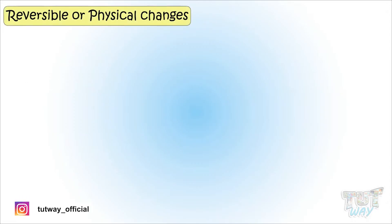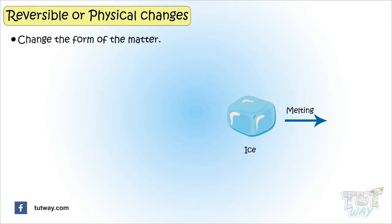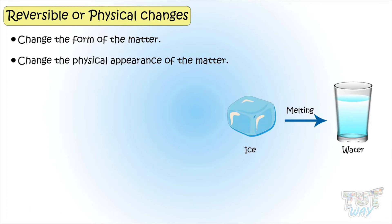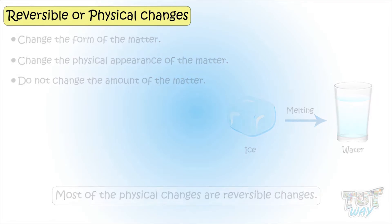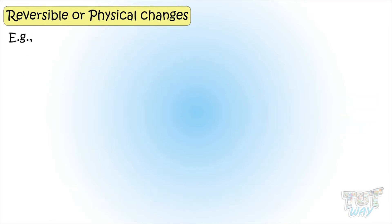Reversible changes or physical changes are the changes that change the form or physical appearance of matter and do not change the amount of matter in an object. And most of the physical changes are reversible changes. Now let's see some examples of physical changes.